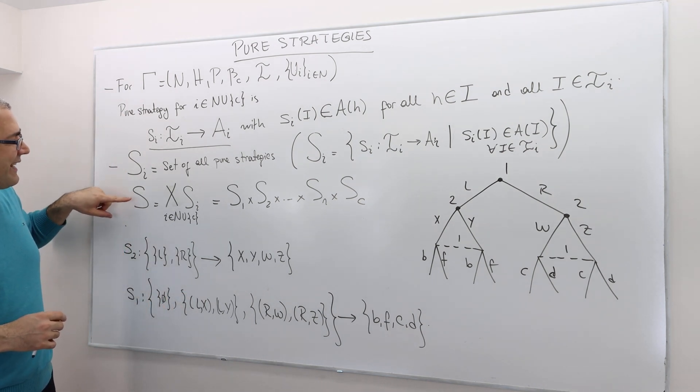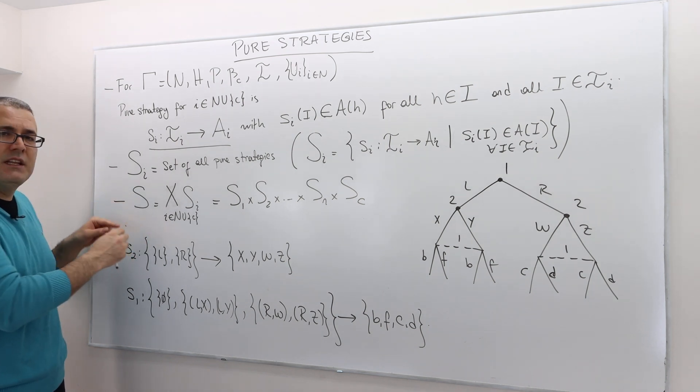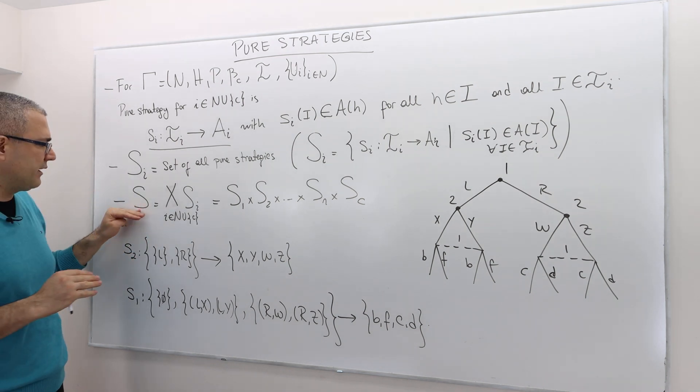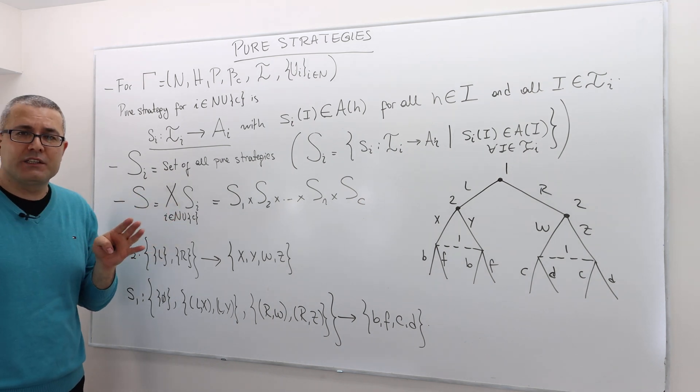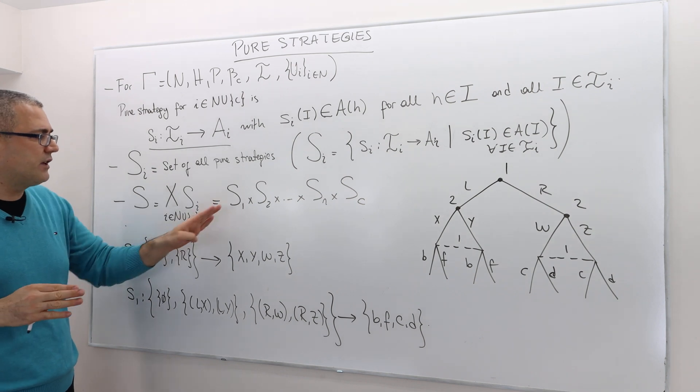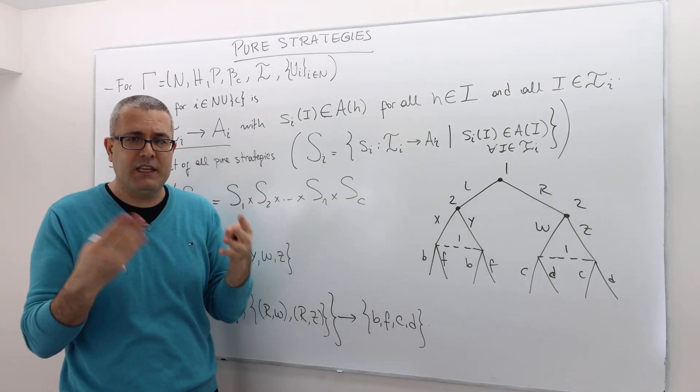Then the capital S, when we drop I, the subscript I, means it's a profile of pure strategies. It's nothing but a Cartesian product of each player's, including the nature's strategy sets. So S1 cross S2 cross all the way up to Sn cross Sc, meaning the strategies, quote unquote, strategies of the nature.